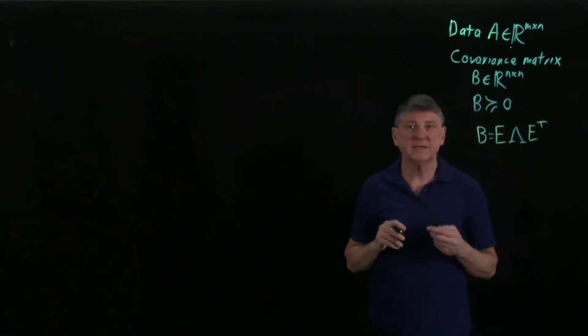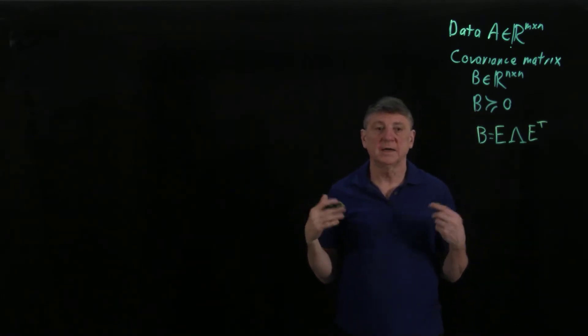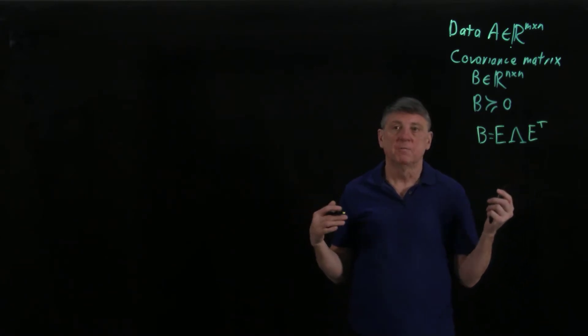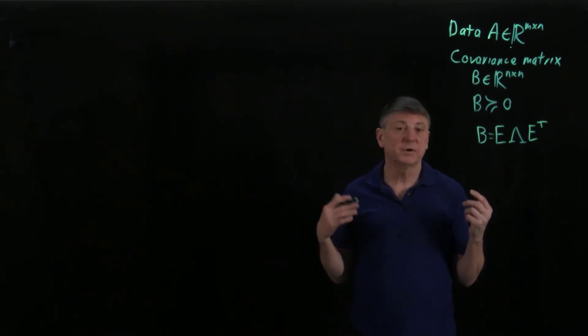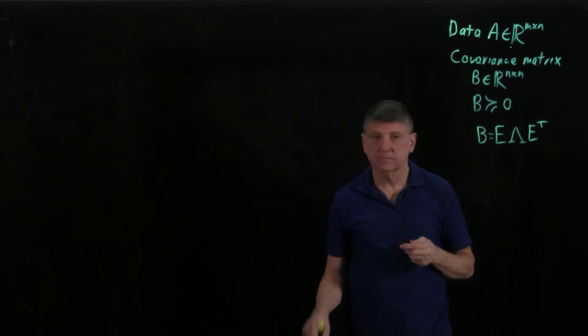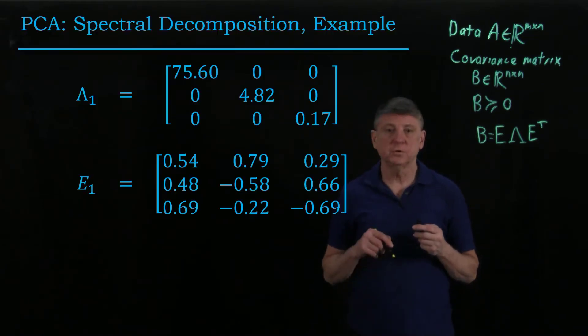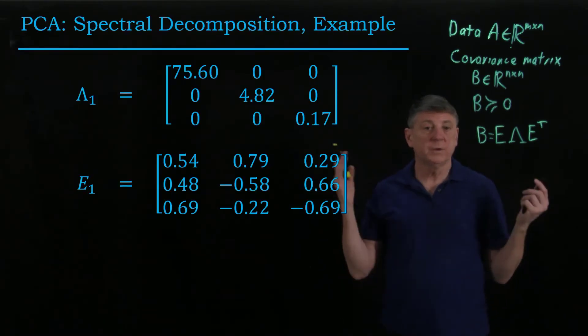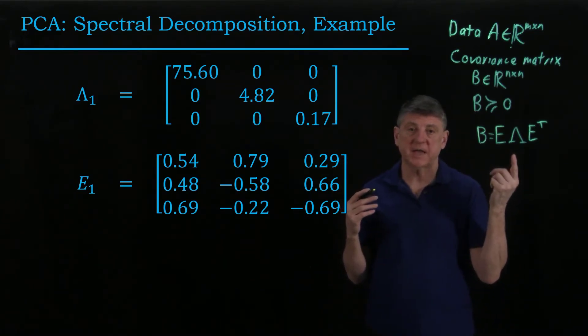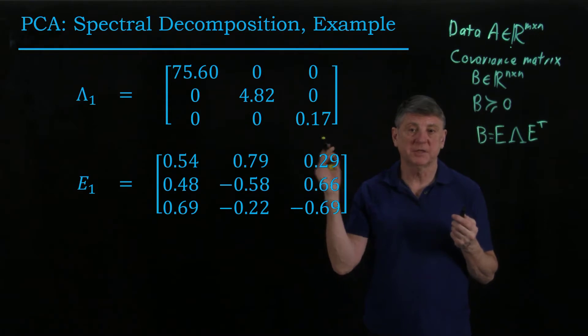So let's explore an example of this eigen decomposition or spectral decomposition for some data that we previously looked at in an earlier session. They were fictitious quiz answers. So for those data, when we form the covariance matrix and we find the spectral decomposition.